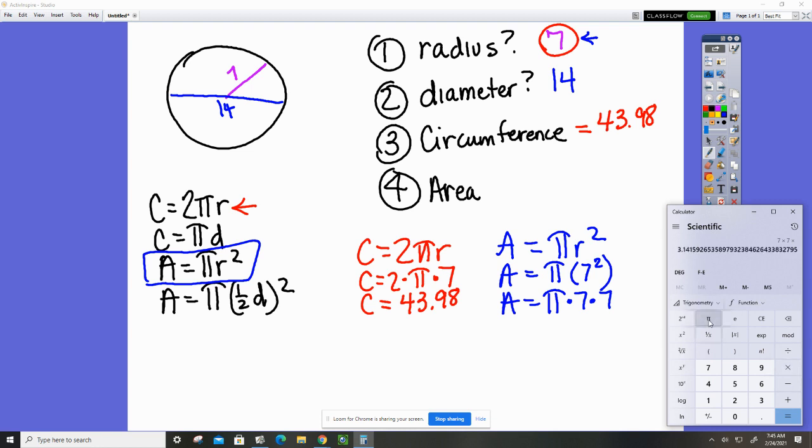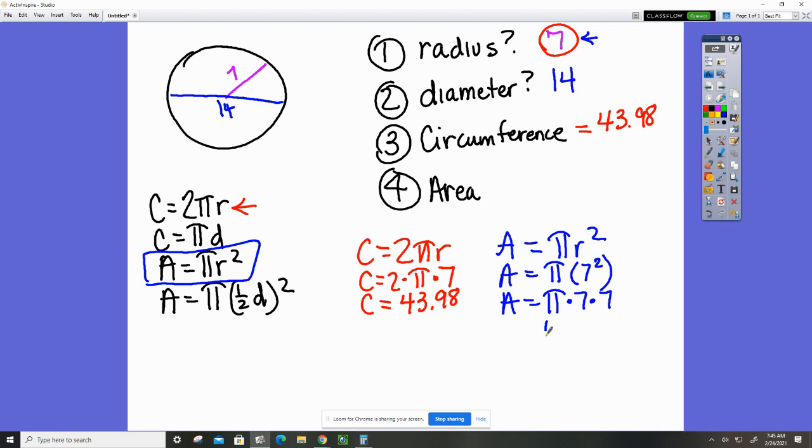153.938, so that rounds to 153.94. Your answer is 153.94. So you will have this to complete. This is your review and there is one or two practice for you to do as well.